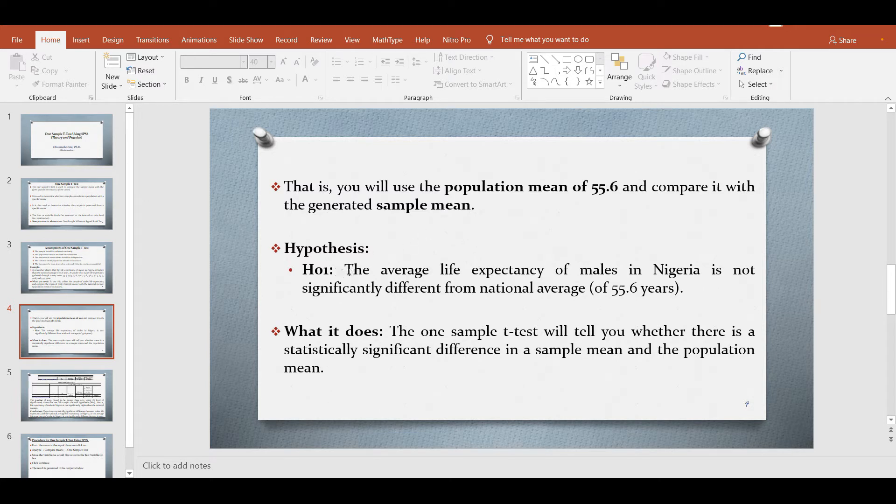Suppose we have this hypothesis generated from that particular question we highlighted earlier. The average life expectancy of males in Nigeria is not significantly different from a national average of 55.6 years. What does it do? The one sample t-test will tell you whether there is a statistically significant difference in a sample mean and the population mean. So with this brief introduction, we'll go straight to SPSS to show you how to analyze a one sample t-test.